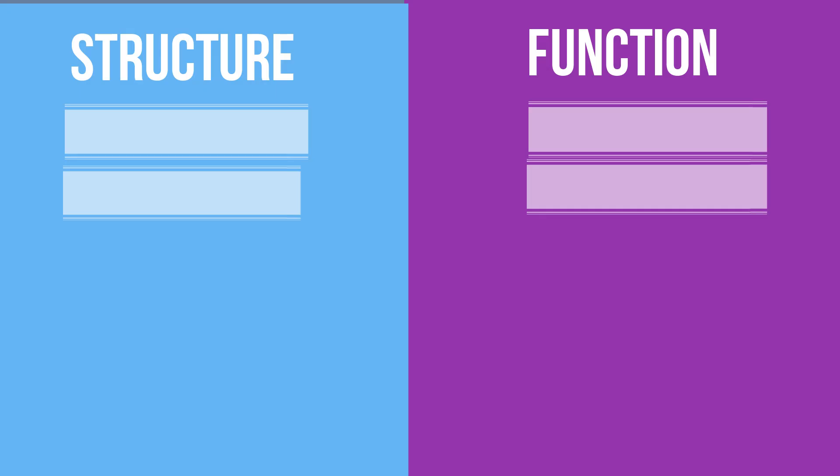Structure answers these questions: What does it look like and what is it made of? Function answers the questions: What does it do or what is its job?